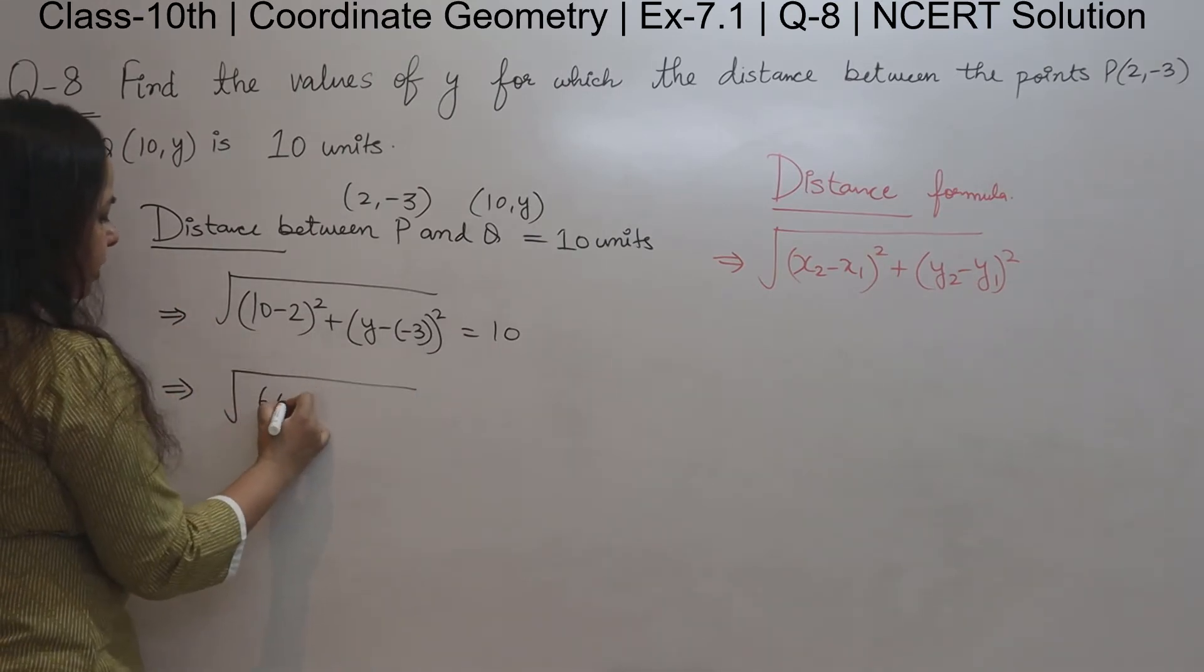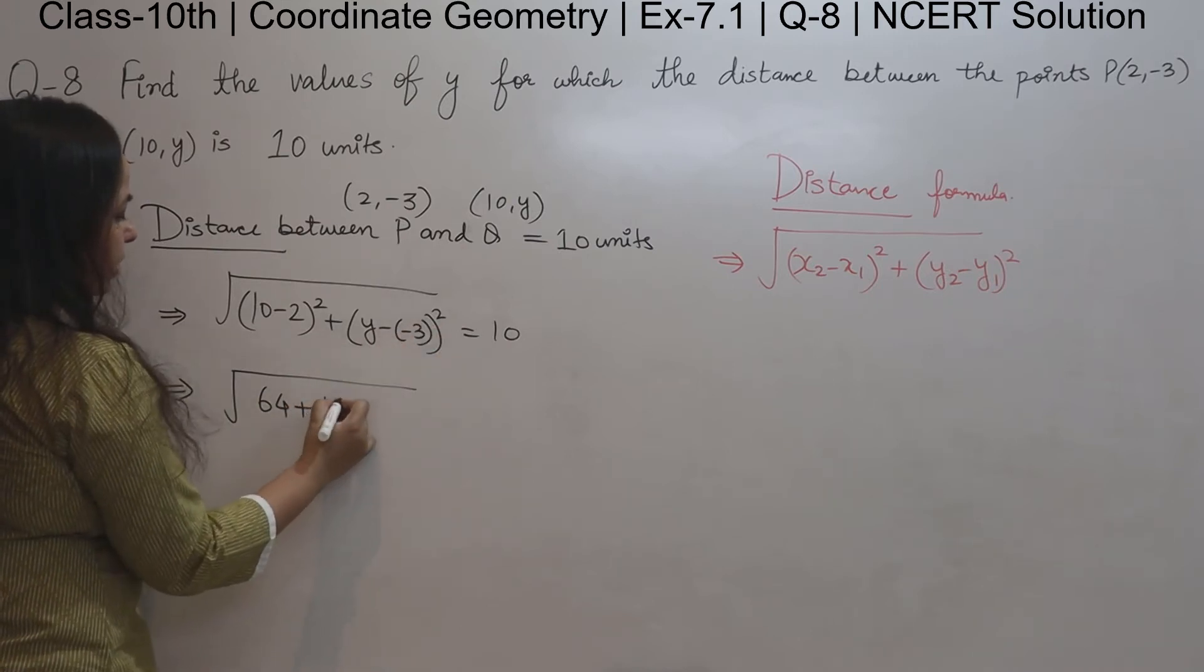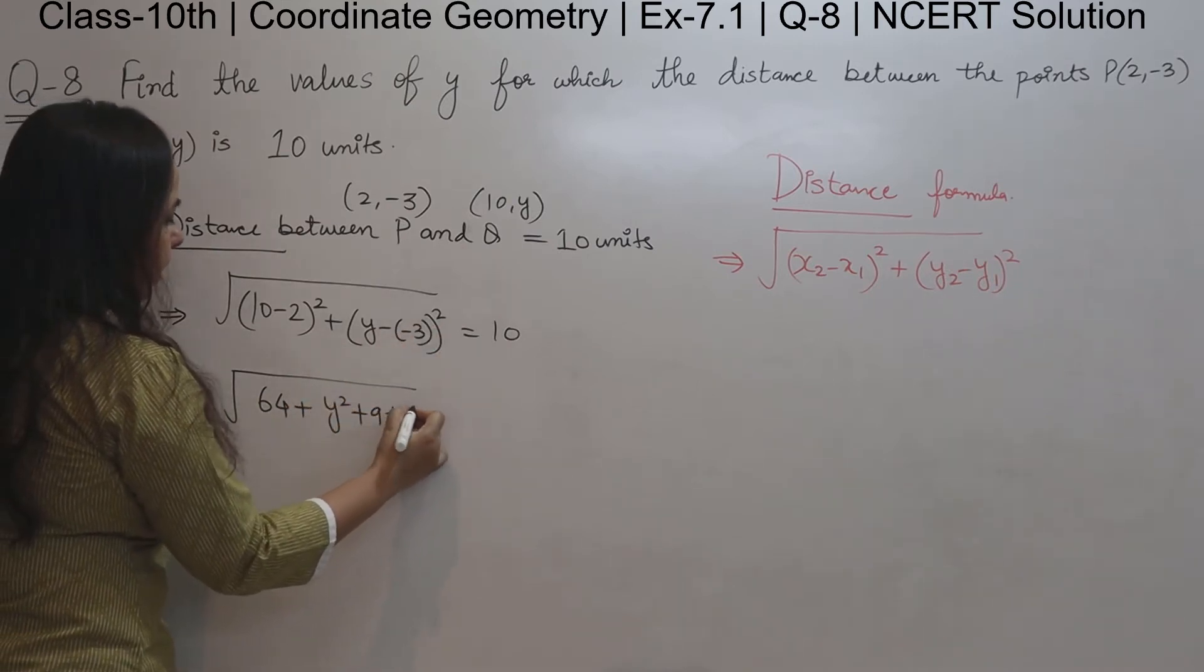So 8 squared is 64, and it becomes y plus 3 whole square, which is y squared plus 9 plus 6y.